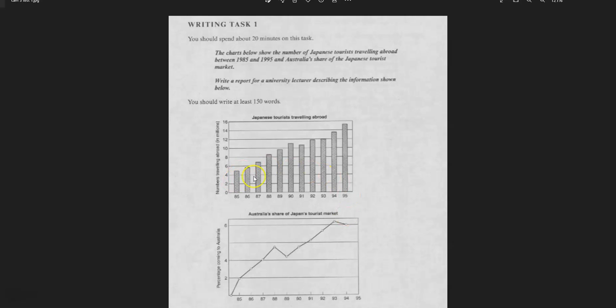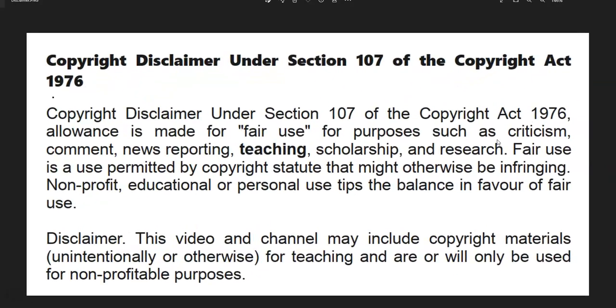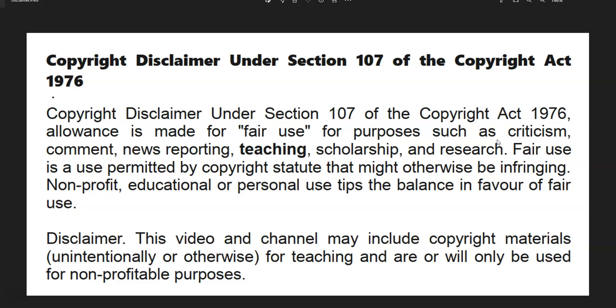So let's take a look. This is the one where we've got two charts — a bar graph chart and a line graph chart. We've got the number of Japanese tourists traveling abroad over a period of 10 years, and how many of those went to Australia — what's the Australian share of the Japanese tourist market.